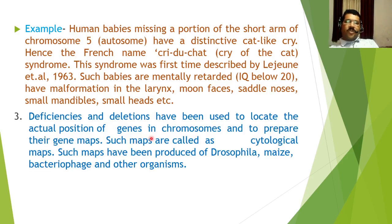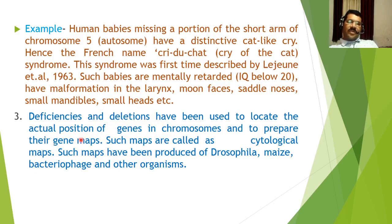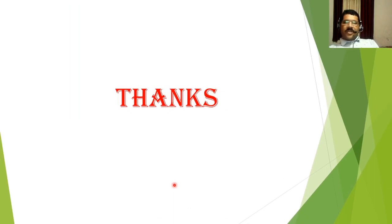Deficiencies and deletions have been used to locate the actual position of genes in chromosomes and to prepare gene maps, called cytological maps. Such maps have been produced using Drosophila males, bacteriophages, and other organisms. So deletion, though harmful in some cases, is used for the preparation of cytological maps or gene maps. This is all about deletion — thanks for your attention.